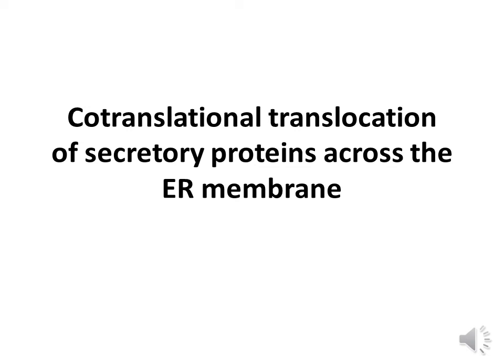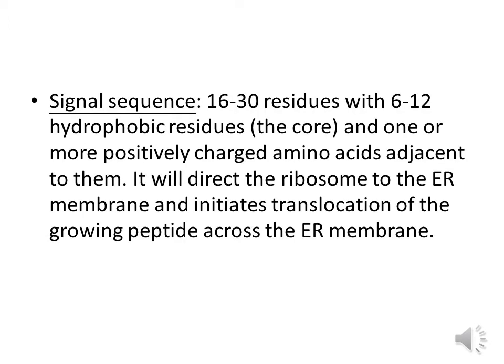Today we discuss the co-translational translocation of secretory protein across the endoplasmic reticular membrane. After translation, the polypeptide is transported to the ER membrane. For this, the following components are needed. A signal sequence of 16 to 30 residues, within which 6 to 12 are hydrophobic residues, plus one or more positively charged amino acids adjacent to them. It directs the ribosome to the endoplasmic reticulum and initiates translocation of the growing polypeptide.